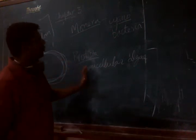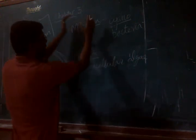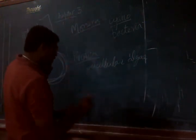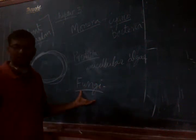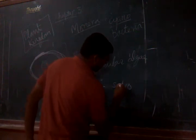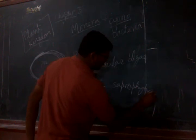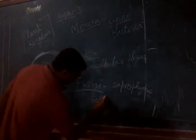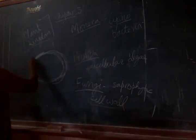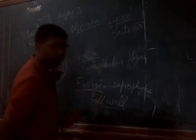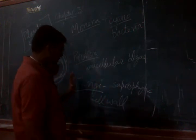But what happened later on? When Whittaker gave the five-kingdom classification, various other criteria were also considered. Based on those, many members which were in kingdom Plantae were taken out and placed into kingdom Monera, kingdom Protista, or even kingdom Fungi. If you study kingdom Fungi, you know that the organisms there are basically saprophytes — they cannot perform photosynthesis. Earlier, fungi, because of the presence of a cell wall, were included in kingdom Plantae. Now they are not; now they are included in a separate kingdom called kingdom Fungi.